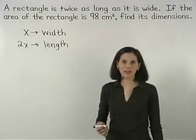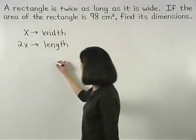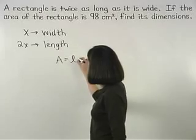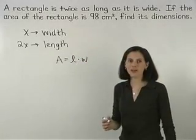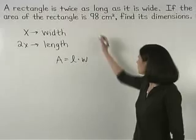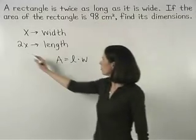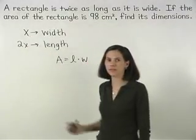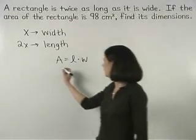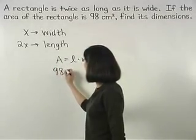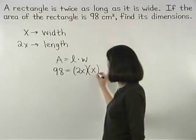Remember that the area of a rectangle is length times width. Since the area of the given rectangle is 98 and the length and width are 2x and x, we can set up the equation 98 equals 2x times x.